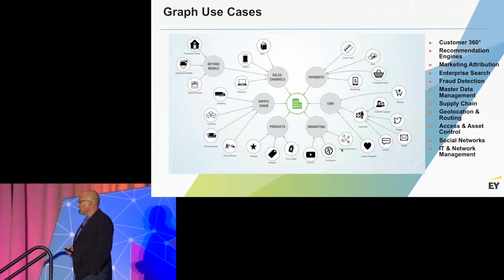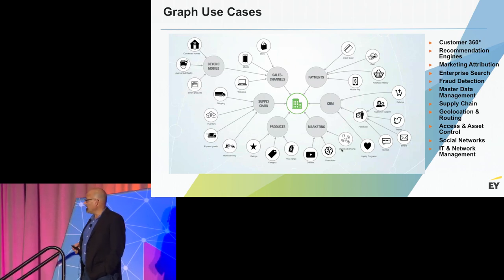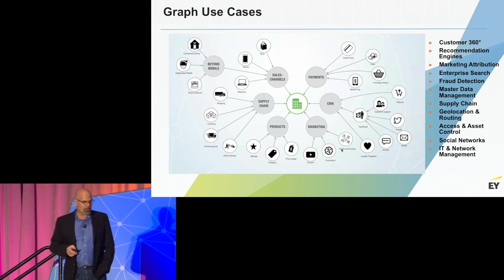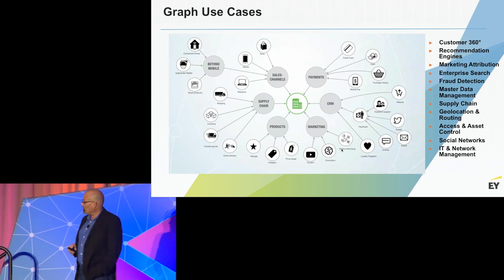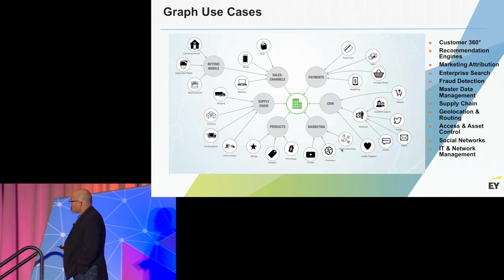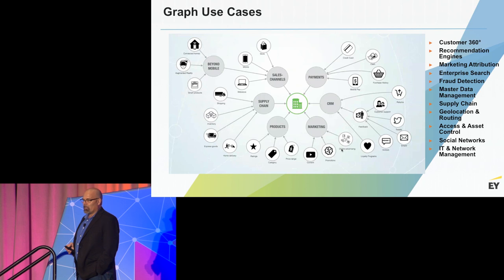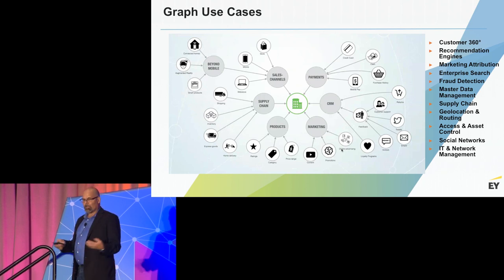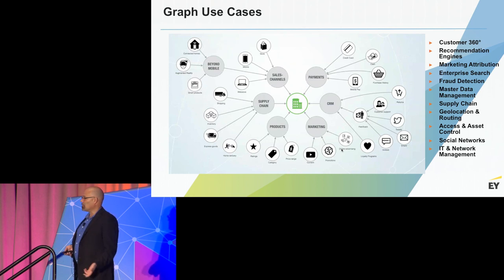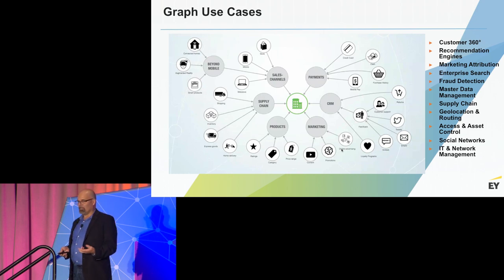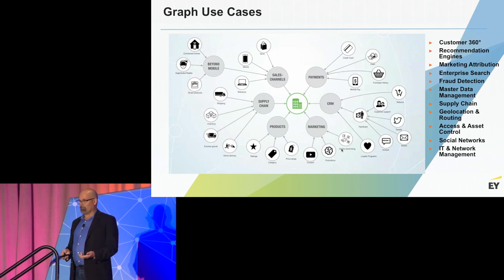There are lots of use cases and more showing up every day. Anytime you've got a process with lots of relationships between things — dependencies, recursion, looking for rare patterns or common patterns — all of these are graph use cases.